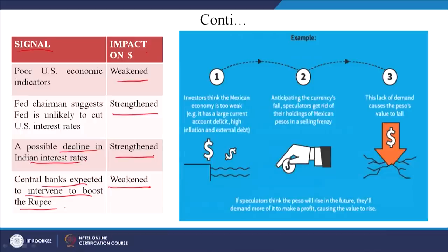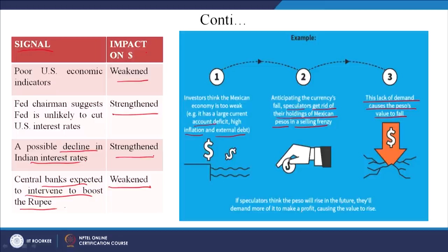Investors think the Mexican economy is too weak - it has a large current account deficit, high inflation, and external debt. Nothing can be worse than this. Anticipating the currency's fall, speculators - who do not own it - get rid of their holdings of Mexican pesos in a selling frenzy. They want to sell it to make more money. This lack of demand causes the peso's value to fall. If speculators think the peso will rise in the future, they will demand more of it to make a profit, causing the value to rise. So speculators, although it may be bad, do have a serious effect on the fall or rise of the currency.